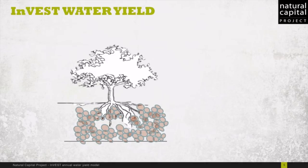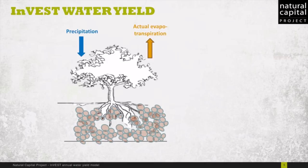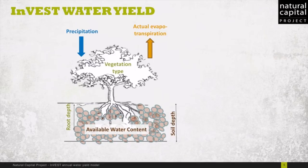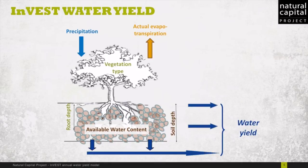To be more specific, the model starts with the total amount of precipitation falling on a landscape each year. From that, it subtracts the amount of water lost due to evaporation and transpiration, which will vary based on vegetation properties like rooting depth, and soil properties such as soil depth and available water content. The result is the amount of water predicted to run off of the landscape each year.